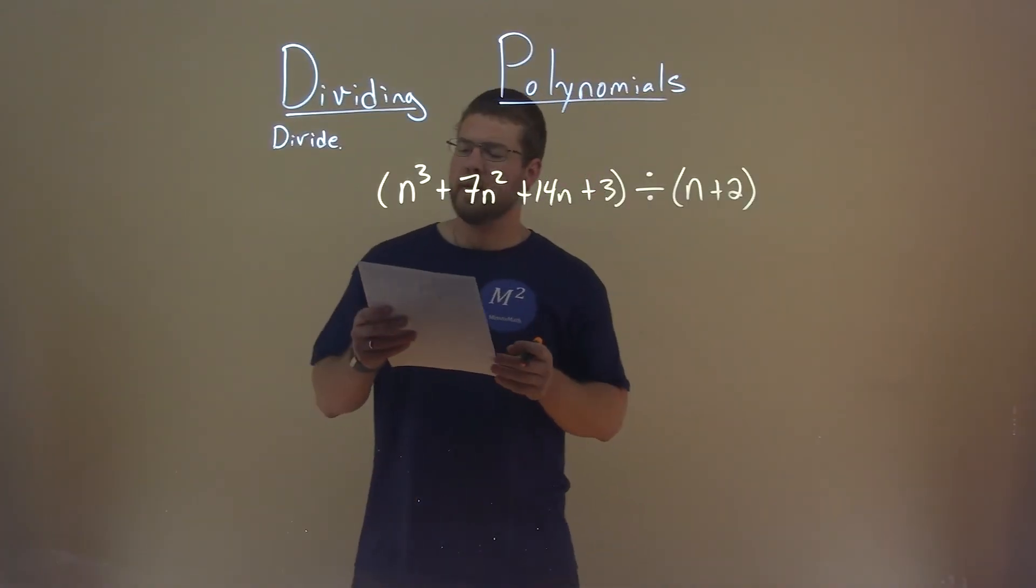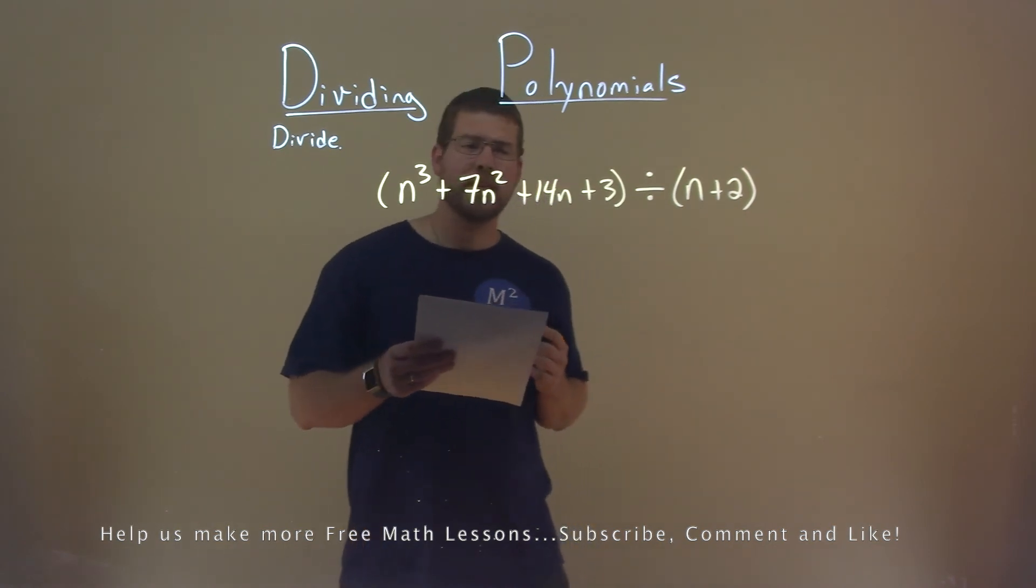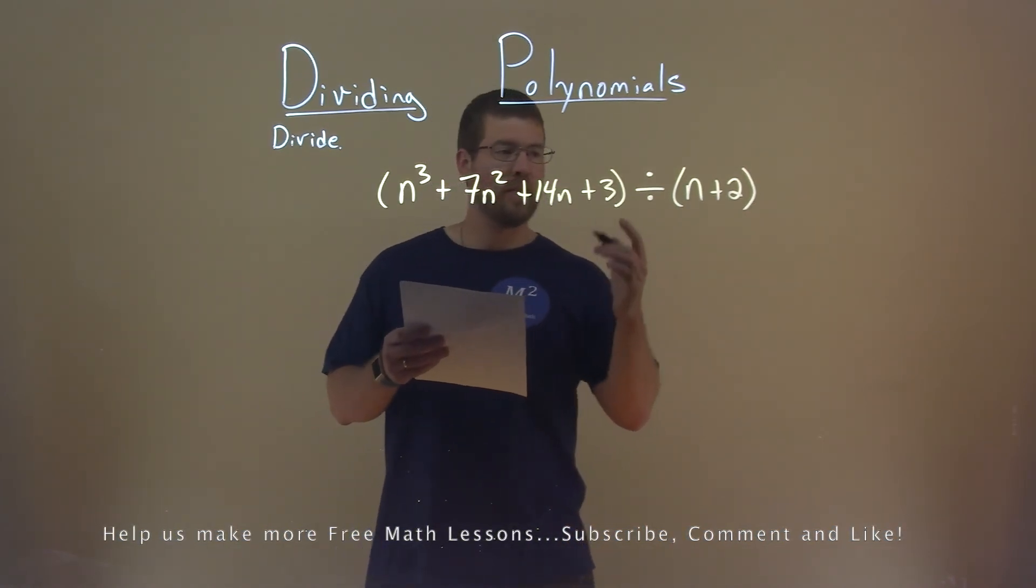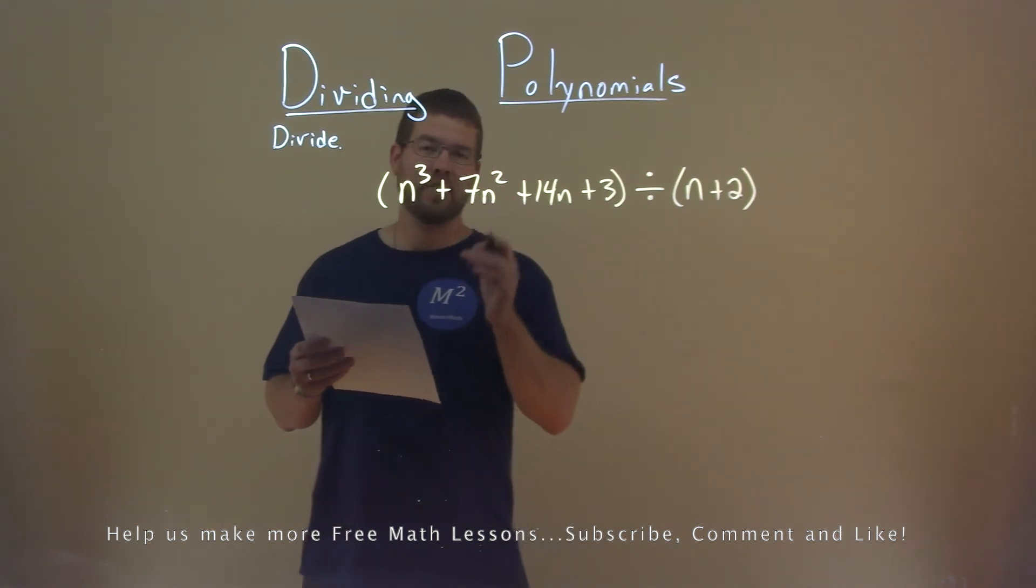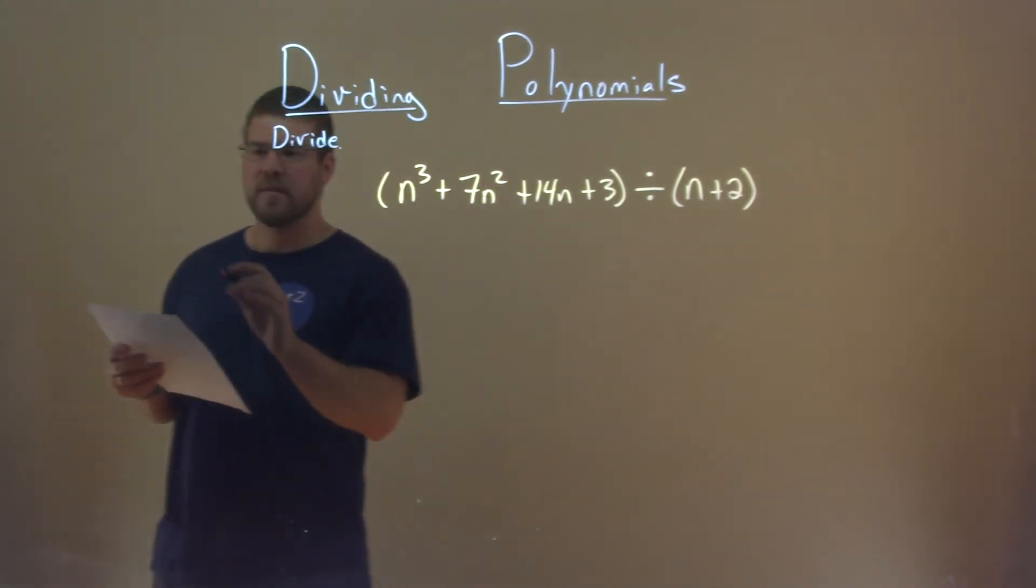We're given this problem right here. n to the third power plus 7n squared plus 14n plus 3 divided by n plus 2, and we need to divide these. Well, let's use synthetic division. Let's set that up here.